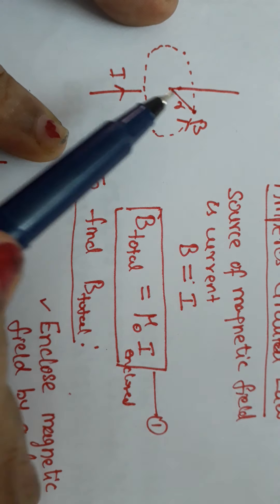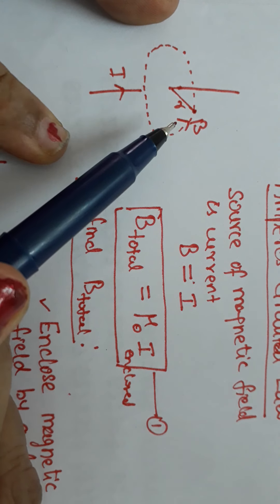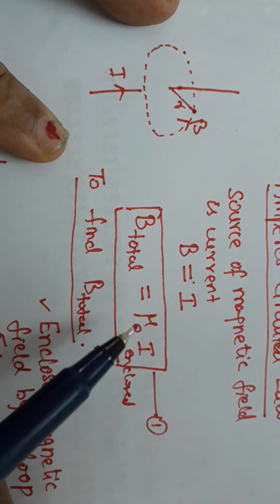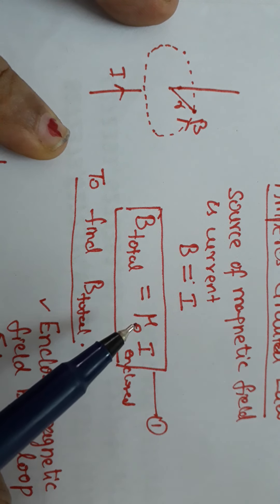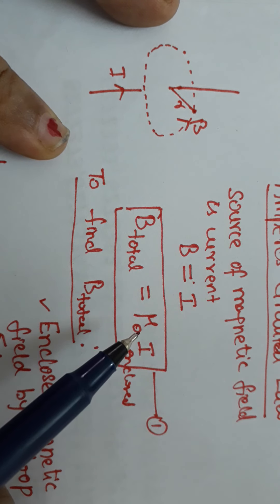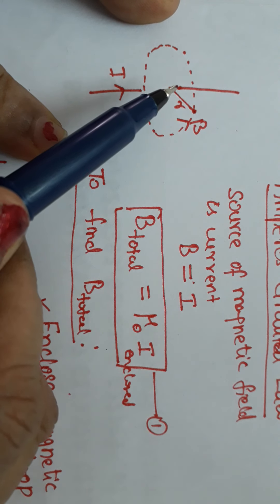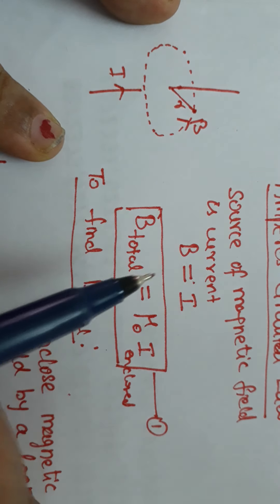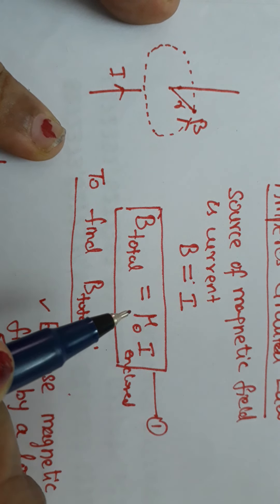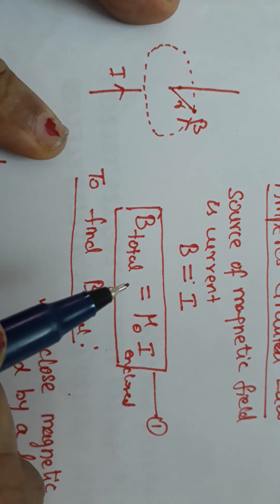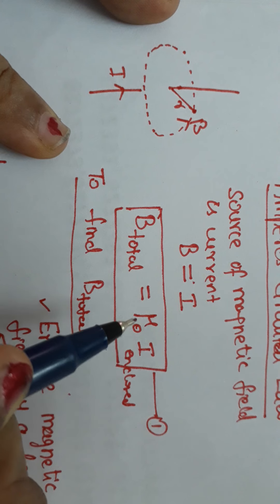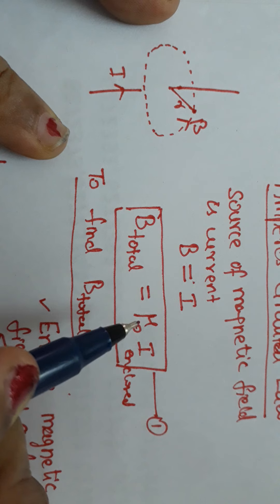The magnetic field will also depend on the medium. The medium also has to be considered. That is the reason we have introduced μ₀ here. μ₀ is the permeability of free space — it is the ability of the medium to conduct magnetic flux lines through it. We have assumed that the conductor is placed in free space, which is why μ₀ is introduced. So the magnetic field depends on both current and μ₀, the medium property.